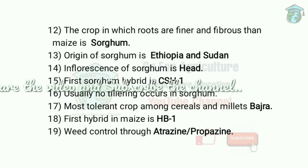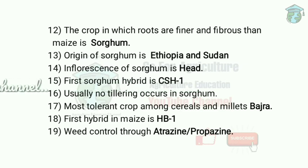The next crop is sorghum. In sorghum, roots are finer and more fibrous than maize. No tillering occurs in sorghum — that is a key point. The origin of sorghum is Ethiopia and Sudan. The inflorescence of sorghum is a head inflorescence. The first sorghum hybrid is CH1, with a maturity of 95 to 100 days.